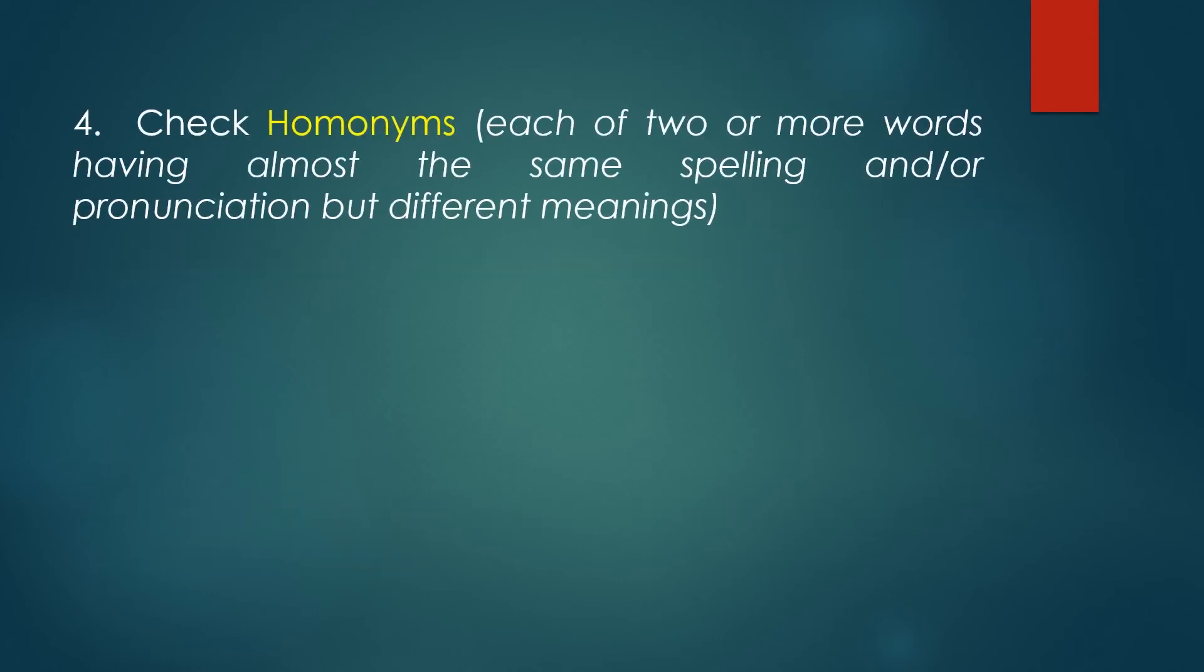Check homonyms. Homonyms are words where the spelling is almost the same, but they are words with different meanings. Here we have an example: Accept (A-C-C-E-P-T) and Except (E-X-C-E-P-T). The spelling is almost the same, but as we all know, these are two words with two different meanings. So be very careful with these words.